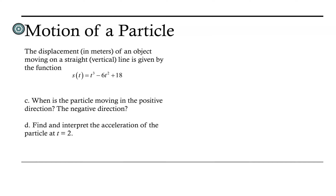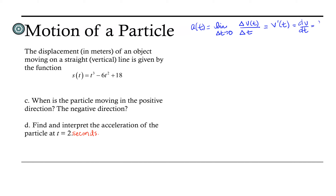Now we want to look at finding and interpreting the acceleration of the particle at t equals 2 seconds. Acceleration is the limit as delta t goes to 0 of the change in velocity over change in time. This leads us to conclude that acceleration is the derivative of velocity, or dv/dt. Keeping in mind that velocity is the derivative of position, we can also interpret acceleration as the second derivative of position with respect to time.